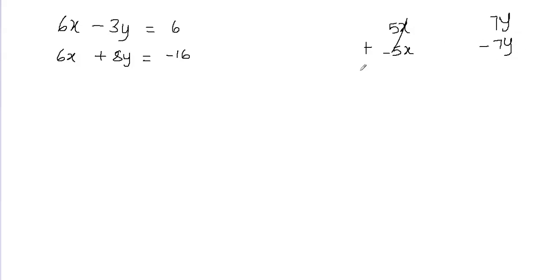So those are the two scenarios: when the coefficients are the same but the signs are opposite, you add your equations. When the coefficients are the same and the signs are also the same, you subtract the equations to eliminate that variable.